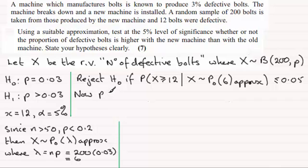So all I'm going to do now is just work out what this probability comes to, and then I can compare it to the significance level. So the probability that X is greater than or equal to 12, given that X is distributed as a Poisson distribution, mean of 6, approximately.